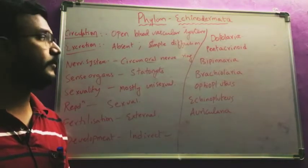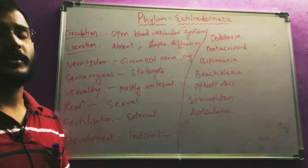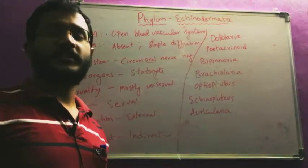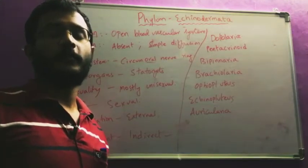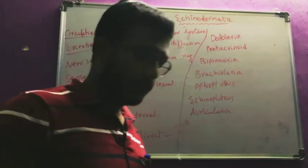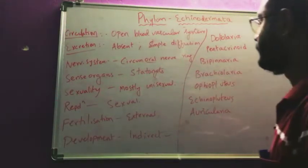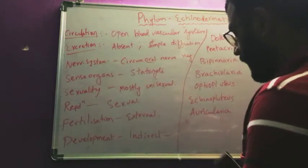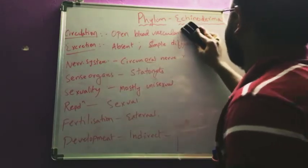The key points: water vascular system is very important. Its functions are — for respiration, for locomotion, to capture the food, and for the transport of food from one region to another region. These are the different general characters exhibited by the animals of phylum Echinodermata.